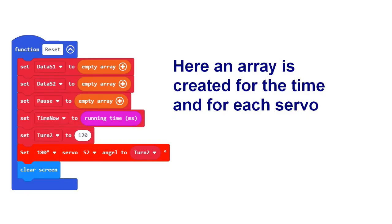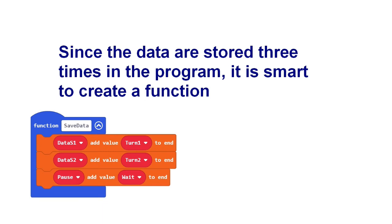In this block three empty arrays are created. One for the time and one for each of the two servos. Each time a movement is made, data for all three things are saved, even if a motor is not moving.